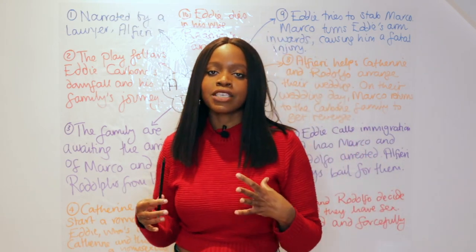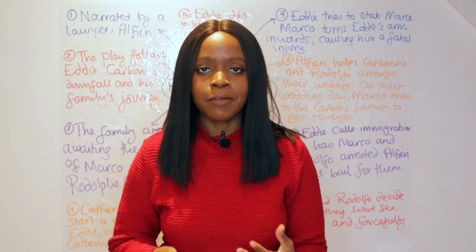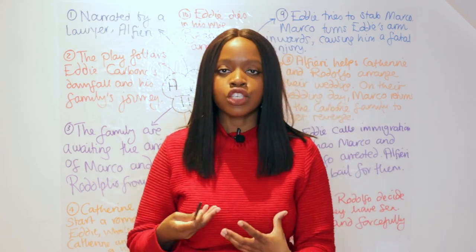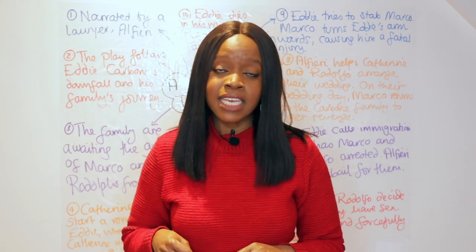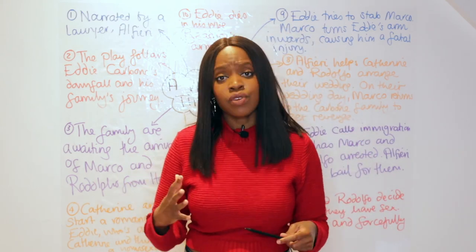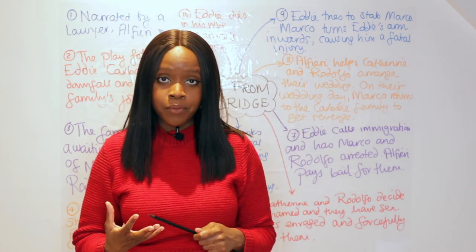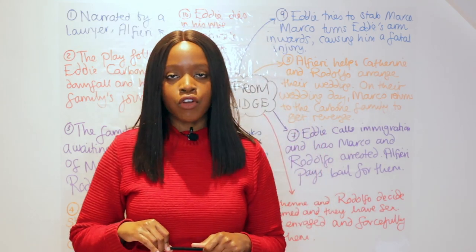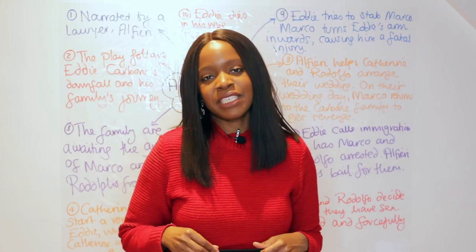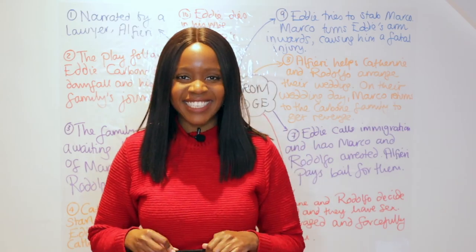This play is meant to be a tragedy. Eddie Carbone is a hard worker, a good man, and a family man. However, his fatal flaw is his sexual interest in Catherine and his attempt to control her sexuality, which ultimately leads to a series of decisions that end with his death. In the following videos, I will focus on the main characters and key quotations to remember, particularly when revising for your essays.